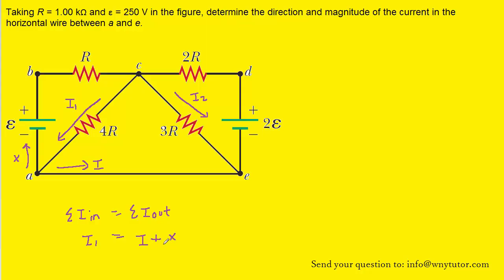We can solve this equation for X by subtracting I from both sides, and we would see that I1 minus I equals X. So we're going to label this current using the label I1 minus I rather than X.